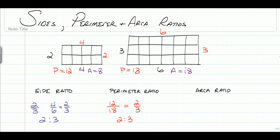So to find the area ratio, we have 8 over 18, but when we reduce that, we only reduce to 4 ninths. So the area ratio is 4 to 9.